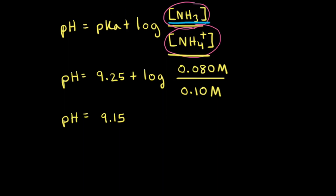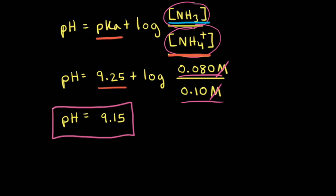With the concentrations plugged in — 0.080 molar for ammonia and 0.10 molar for the ammonium ion — we apply the Henderson-Hasselbalch equation. The pKa here is the pKa of the weak acid, which is the ammonium ion, NH4+. At 25 degrees Celsius, the pKa of the ammonium cation is 9.25. After the molar units cancel and we solve for pH, the pH is equal to 9.15.